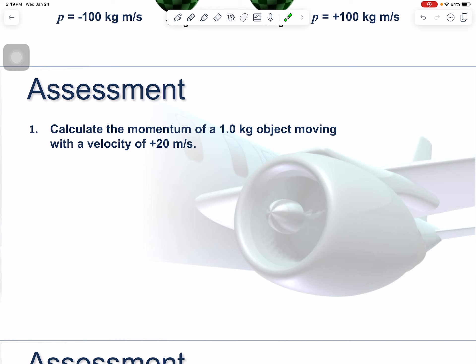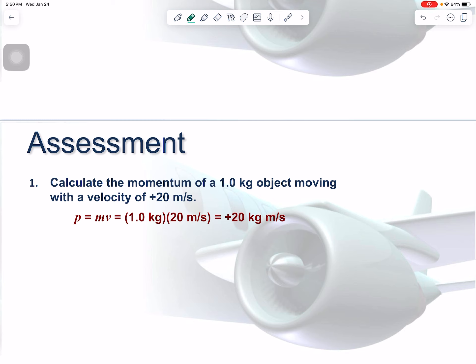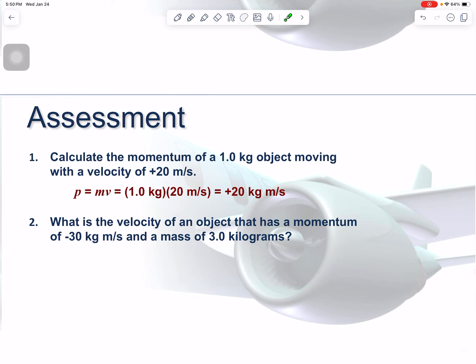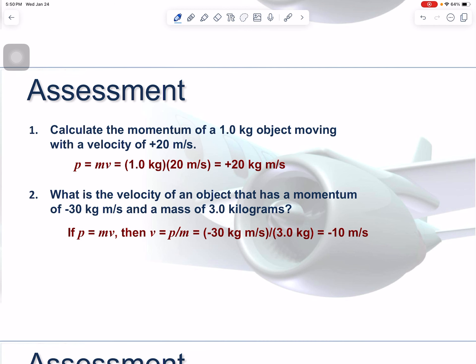For assessment: calculate the momentum of a 1-kilogram object moving at 20 meters per second — that is mass times velocity. Next, what is the velocity of an object with a momentum of −30 kg·m/s and a mass of 3 kilograms? Dividing both sides by m: v = p/m = −30 ÷ 3 = −10 meters per second. The negative sign is important — it tells you the direction.